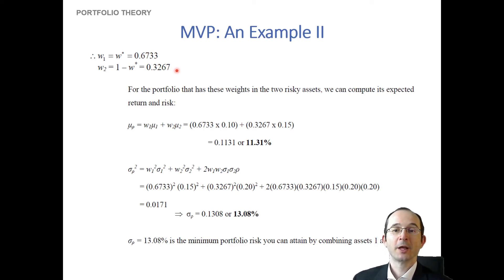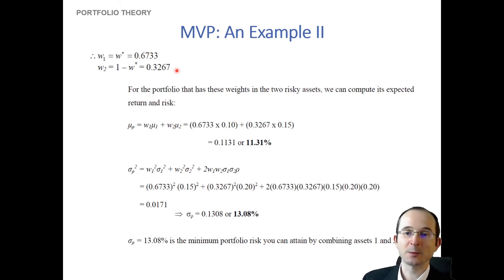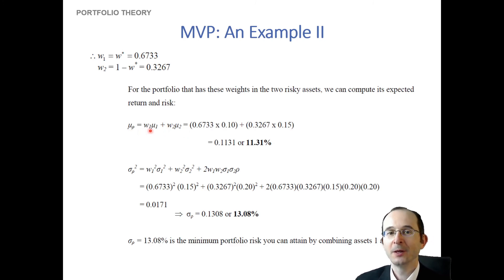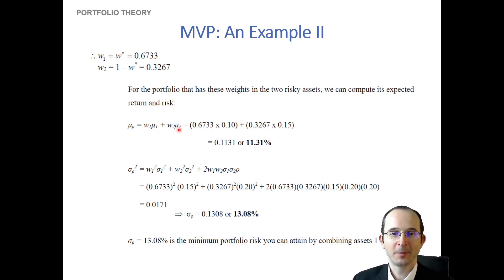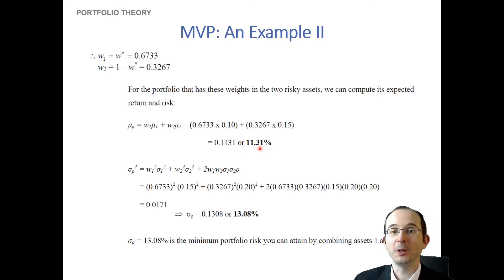Given these weights, we can figure out the expected return and risk on the portfolio of these two assets. The expected return on the portfolio is the weight of the first asset times its expected return plus the weight on the second times its expected return. Plugging in our newly derived weights and given expected returns, the expected return on the portfolio is 11.31%.